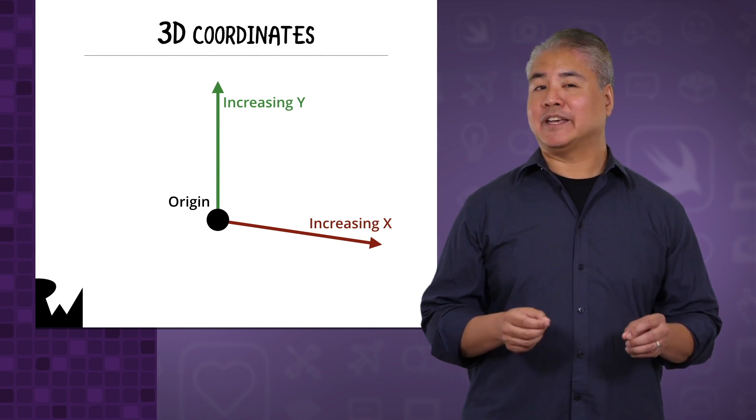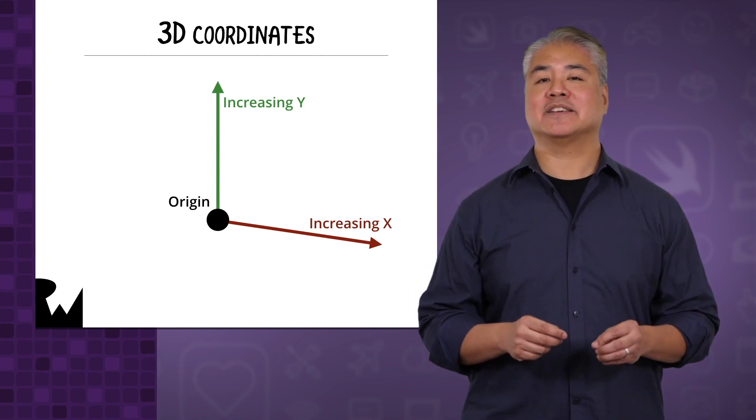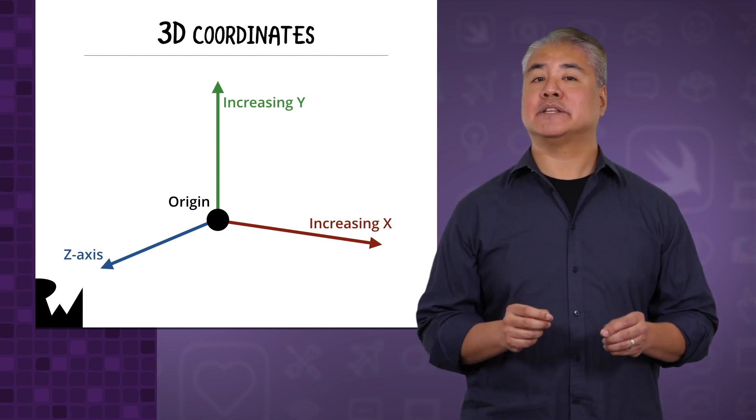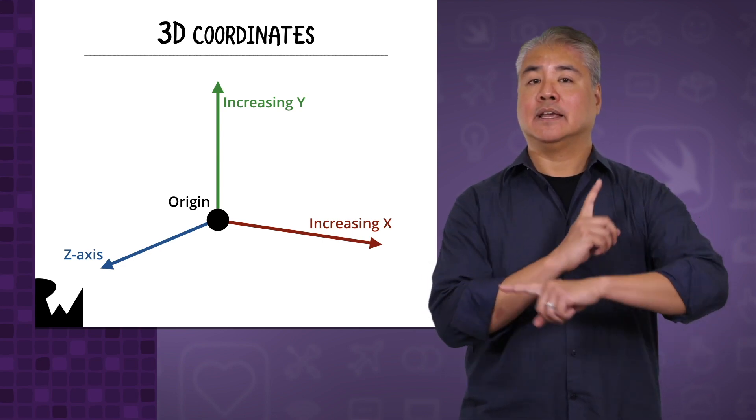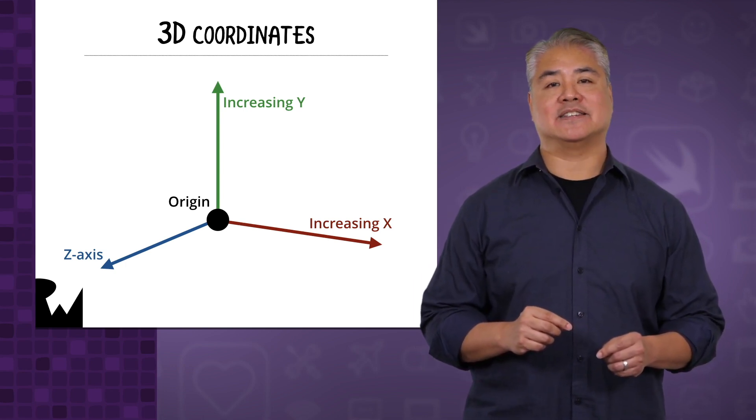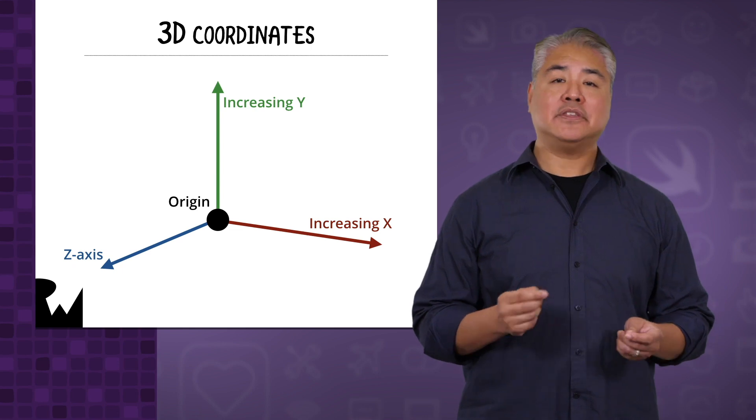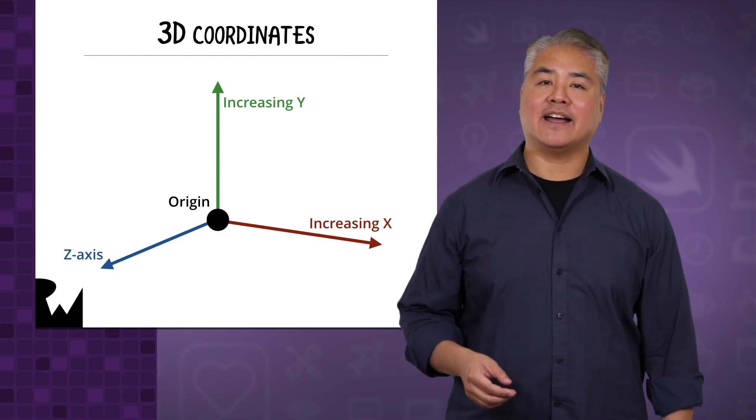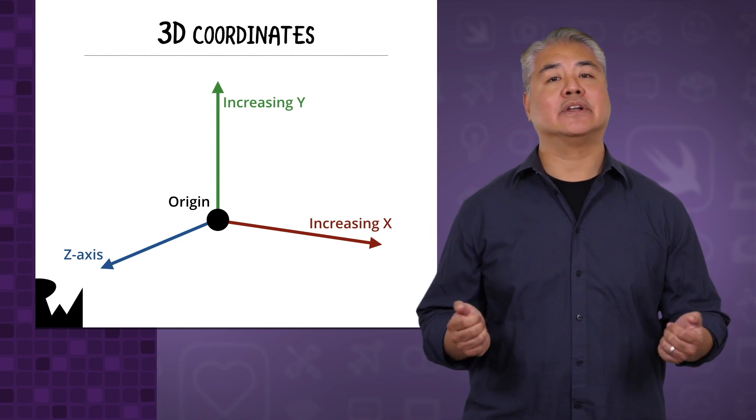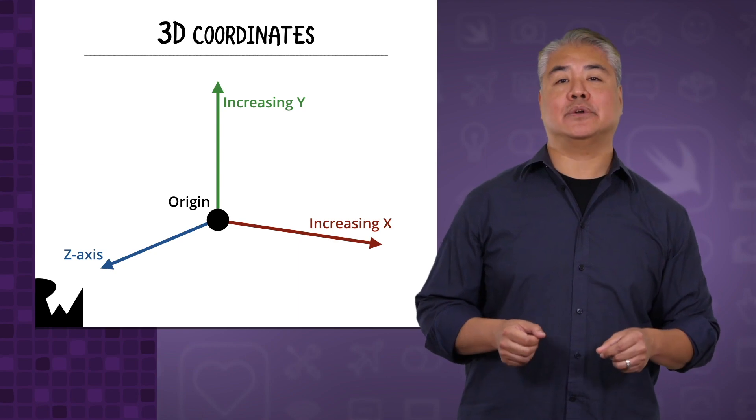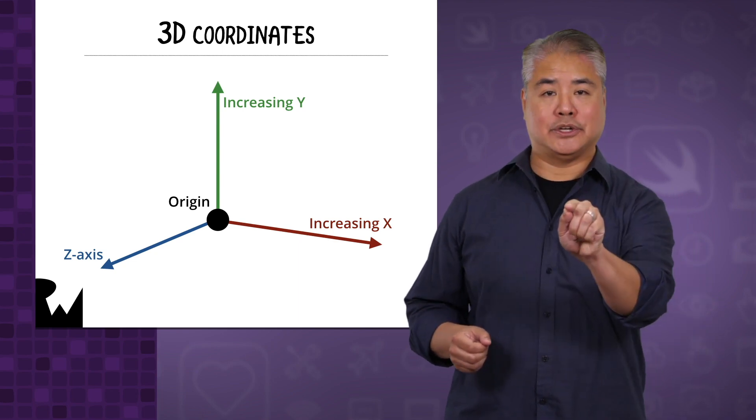You've probably guessed that the third dimension is defined by the Z axis. Just as the Y axis is perpendicular to the X axis, the Z axis is perpendicular to both the X and Y axes. If you think of the X axis as defining left and right, and the Y axis as defining up and down, the Z axis defines toward you and away from you, with Z increasing as it goes toward you.